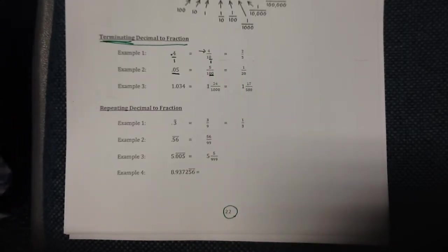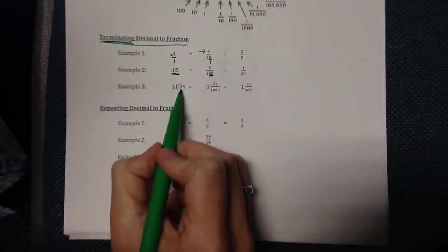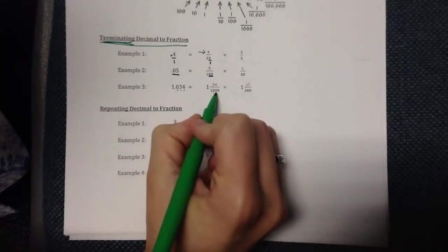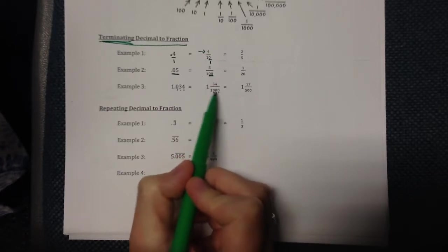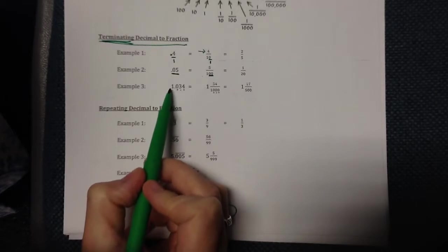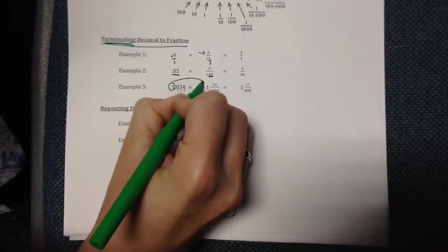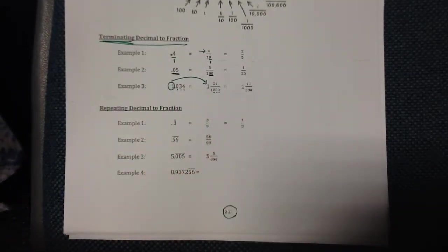Here's example number three. Notice we have the tenths, hundredths, thousandths place — there are three numbers after the decimal, so we're going to put three zeros with a one in front of it. The thousandths place means the 34 goes over one thousand. If you have a number in front of the decimal, that number just goes right out in front of the fraction, so it would be one and thirty-four thousandths.